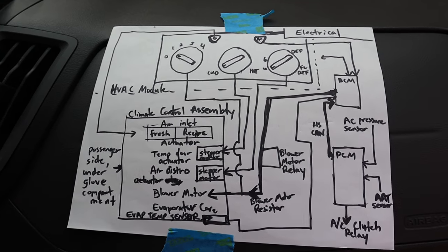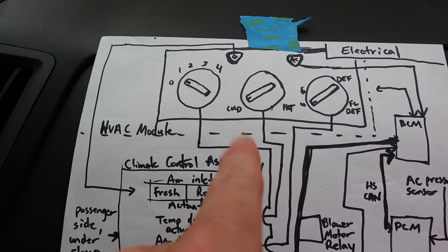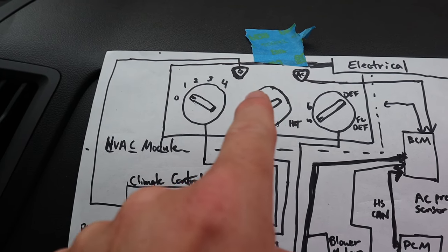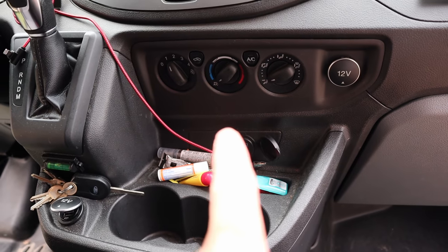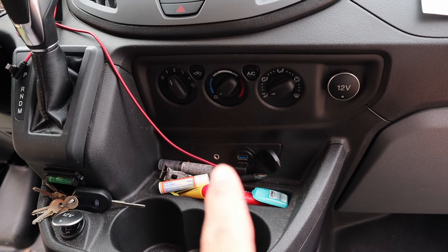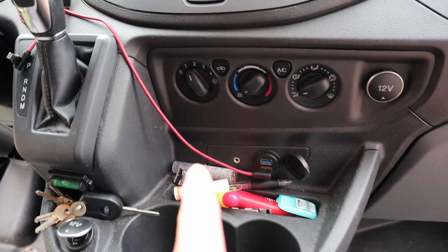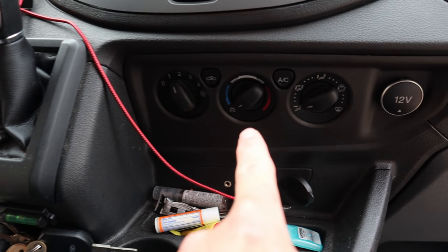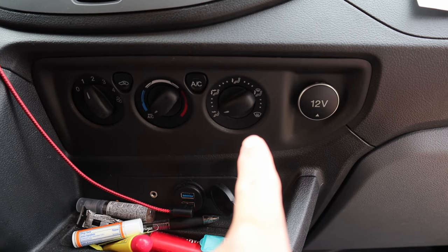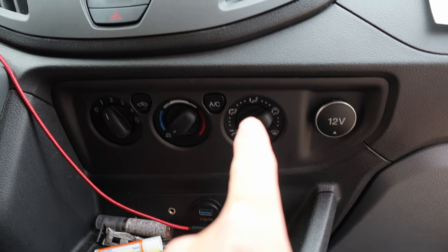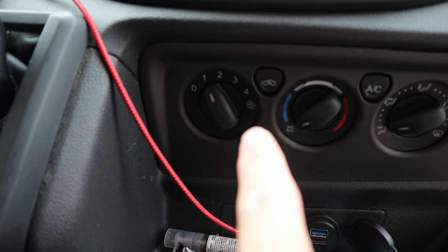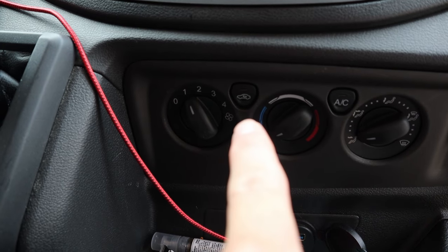I want to start by talking about the electrical from the user input perspective. This is the HVAC control panel, which is part of the HVAC module. There's a variety of selectors and controls: a fan or blower motor speed control, a temperature control, an air distribution control, an AC on control, and also a recirculation button.